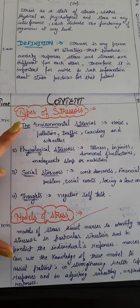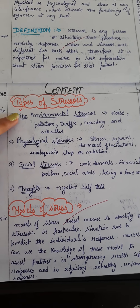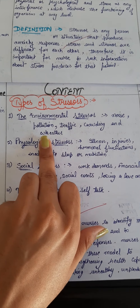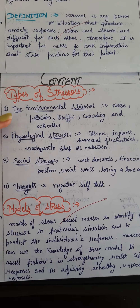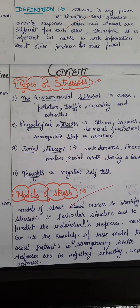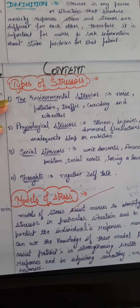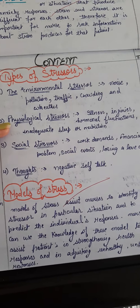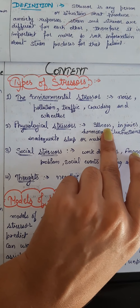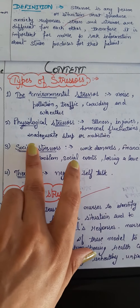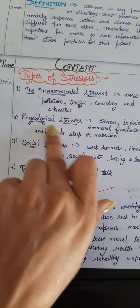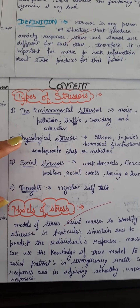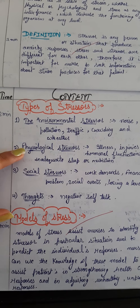The four types of stressors are: environmental, physiological, social, and thoughts. Environmental stressors arise when our body reacts to noise, pollution, traffic, crowds, and weather. Physiological stressors are related to our body — whenever we are suffering from illness, injury, hormonal fluctuation, inadequate sleep, or poor nutrition, these bodily problems are known as physiological stressors which further produce stress.